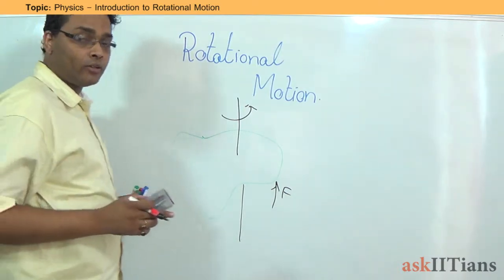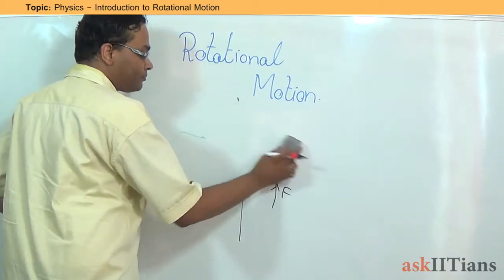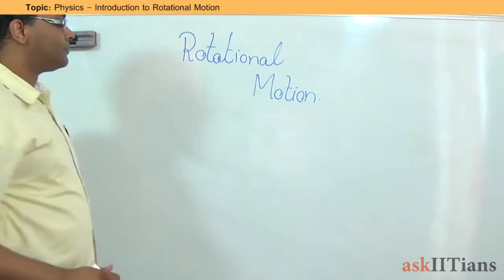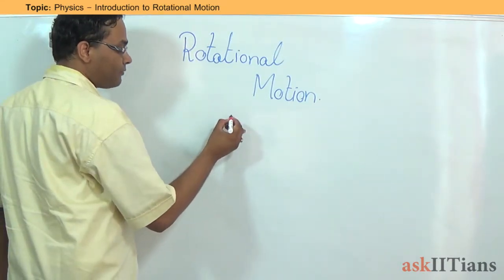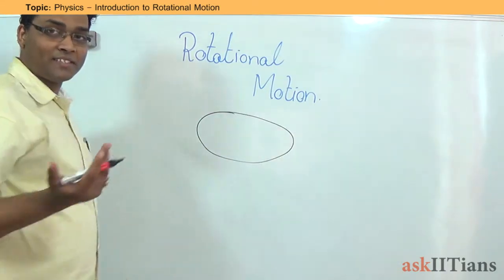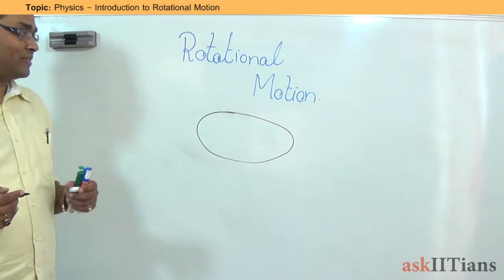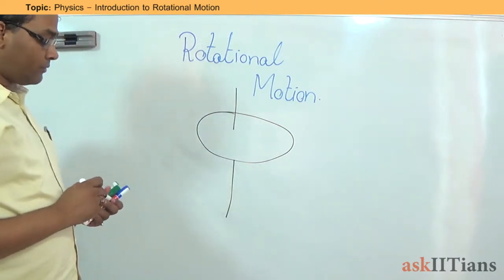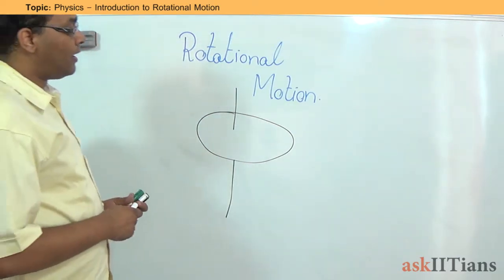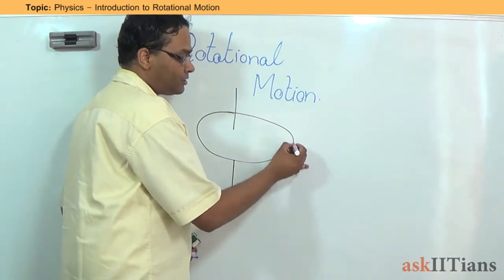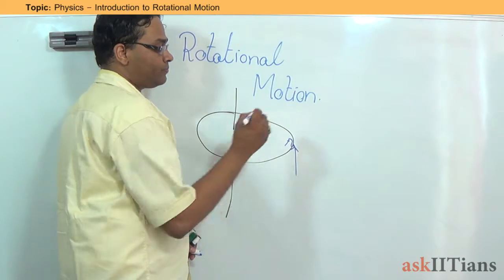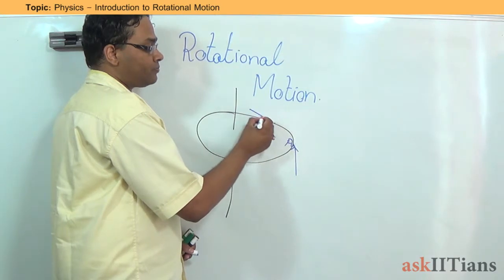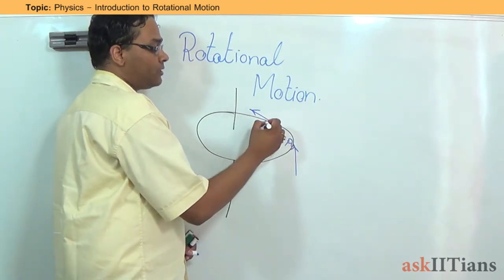Let's see what all are the forces that are acting on this object such that it moves in its plane. Let's take a very simplistic figure. Let's assume that it is a plane, and there is an axis that is passing through a center. I am applying force in a tangential way, let's say at this point. If I name this as B, after some interval, this point is going to move here, so let's say this is my point B.